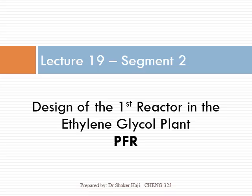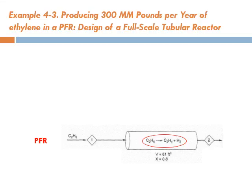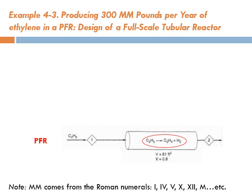As promised, we said we're going to meet shortly with segment two of Lecture 19, and now we're going to really design the first reactor in the ethyl glycol plant, which is a plug flow reactor. Here's our reactor, and we are feeding it with ethane, which is cracked into ethylene and hydrogen.